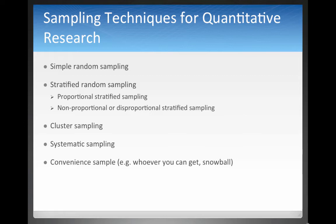Non-proportional or disproportional stratified sampling is when you actually increase the participation rate of certain groups. For example, if 0.1% of the population at a university comes from Azerbaijan, that would result in half a person in your sample — so you might round that up to one person, because it's hard to sample half a person.